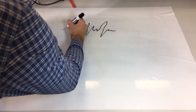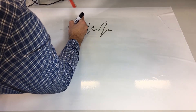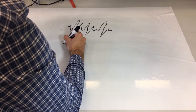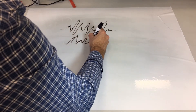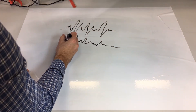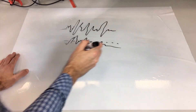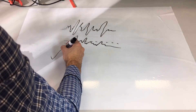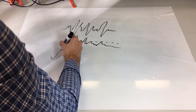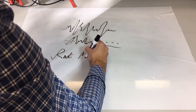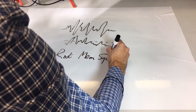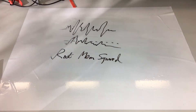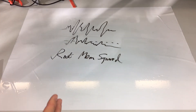We can still take every single point along, square it, and then take the average. By taking the square root we get the root mean squared, and that's something we can calculate for any wave.